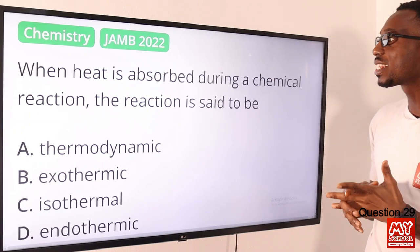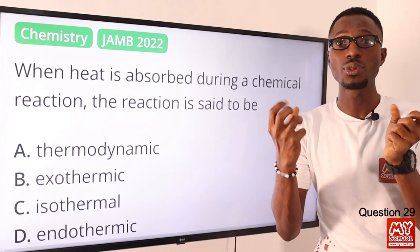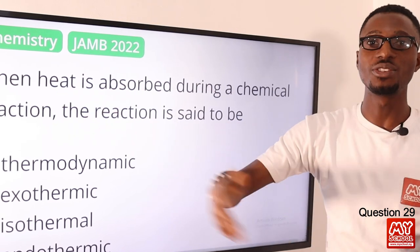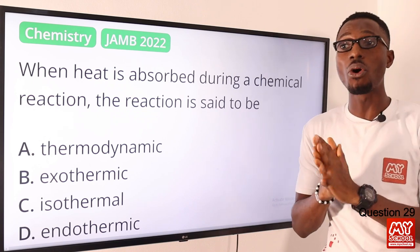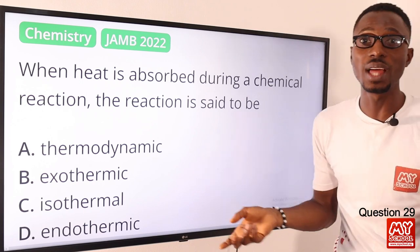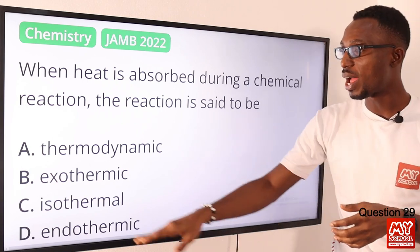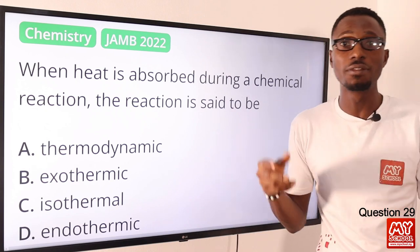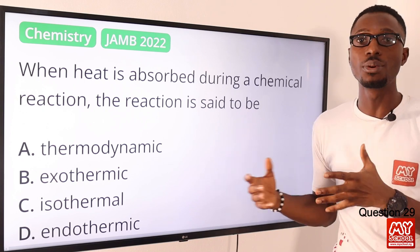Question 29. When heat is absorbed during a chemical reaction, the reaction is said to be endothermic. The release of heat is an exothermic reaction — exo meaning outside. When it comes to thermodynamics, you are looking at the relationship between work, energy, temperature and the like. We also have isothermal — from that word, that tells you constant temperature when there are changes in volume, pressure and so on. So basically the correct option is option D for an endothermic reaction.